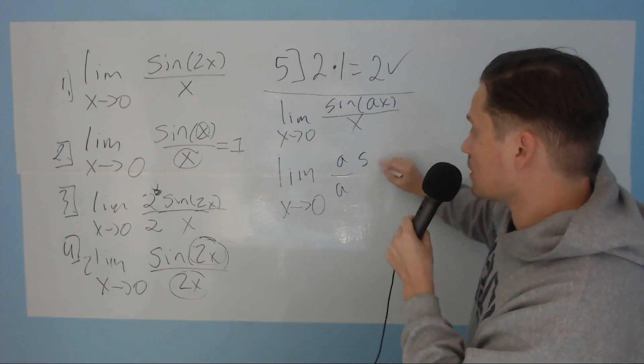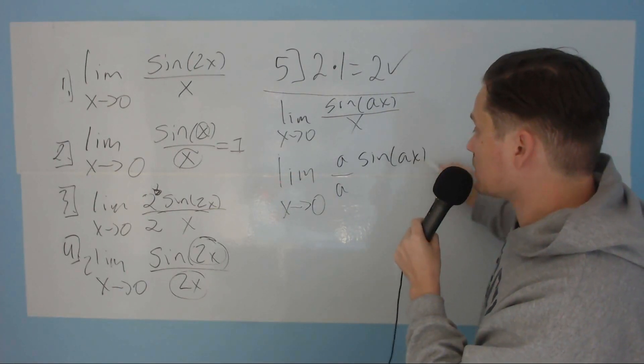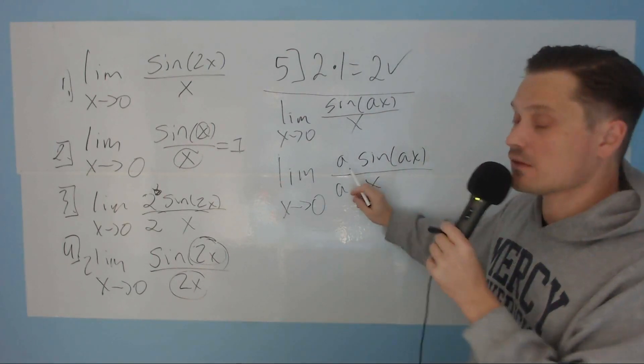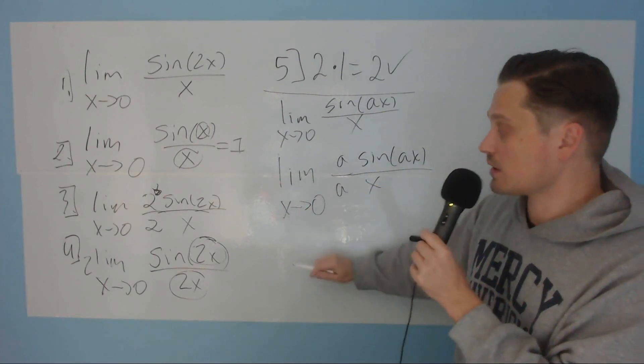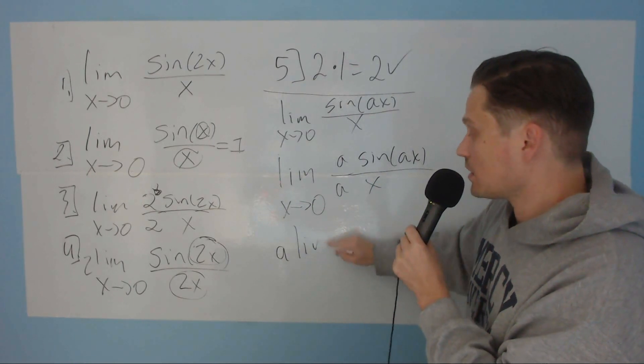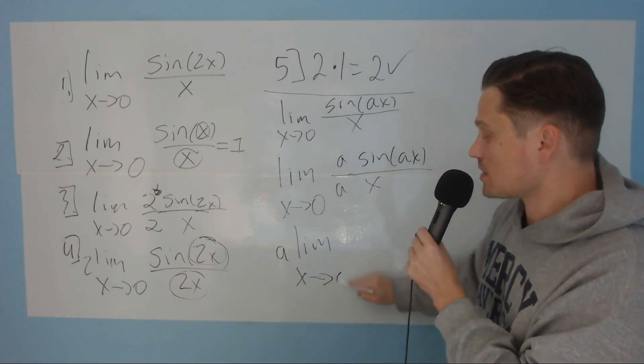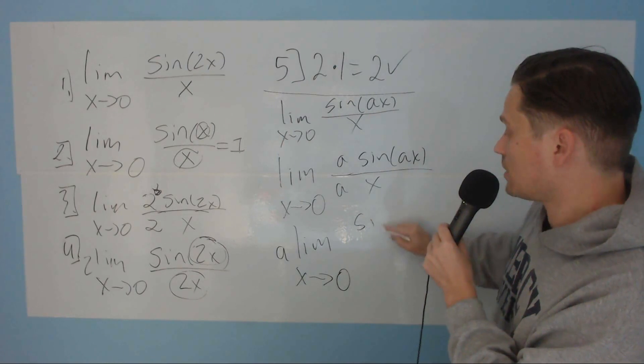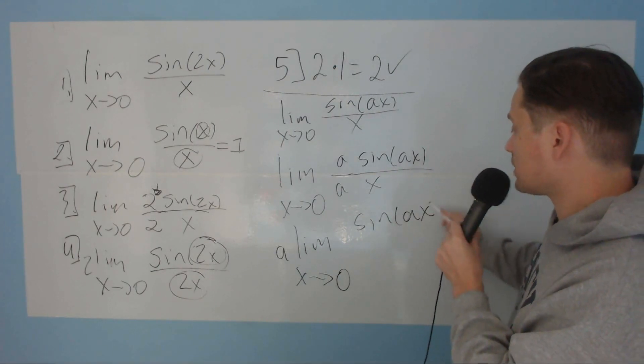So I'm going to get here sine of ax over x. And now take that a from the top and just separate it out in front. So it becomes a times the limit as x approaches 0 of sine of ax over ax.